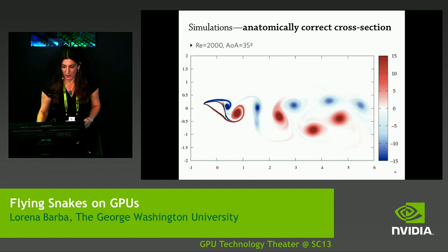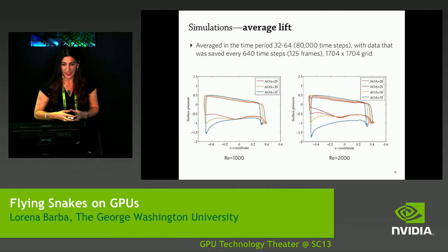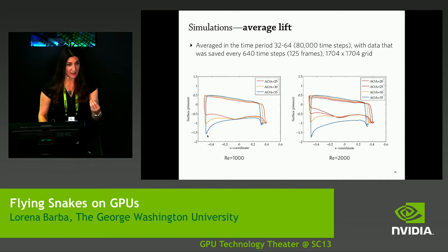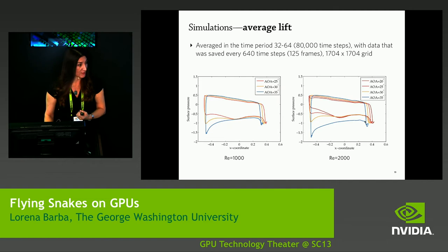We can measure details of the pressure signature around the body. This is the average pressure distribution around the body. For different angles of attack — 25, 30, and 35 degrees — in the case of 35, you get that extra suction at the leading edge. And in the case of 35 with a higher Reynolds number, you get increased suction all across the upper surface. This increased suction is contributing to that extra lift. We see it in the calculations, but we don't know why.